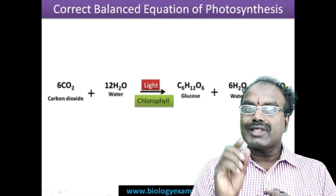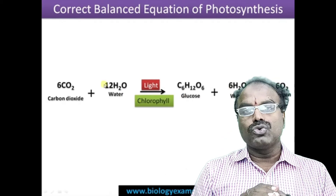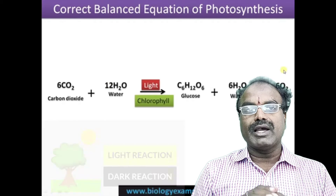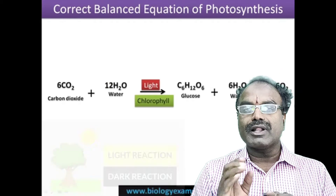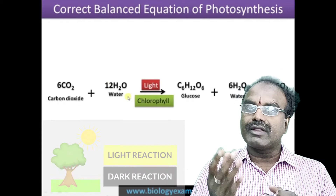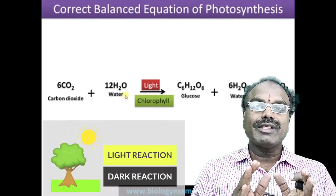Photosynthesis occurs in two stages. They are: one is the light reaction, and another one is the dark reaction.